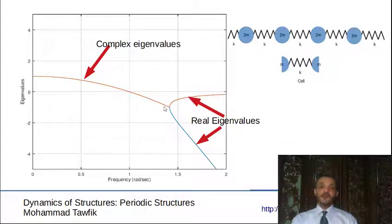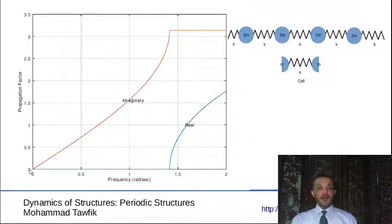Now, if we use these eigenvalues to obtain the propagation factor, so we will just use logarithm or the arc cosine. In that case, you will find that we have an imaginary number and the zero real number. So the imaginary part is increasing from zero to pi as the frequency changes from zero to square root of 2. As soon as it reaches square root of 2, it plateaus at the value of the imaginary part stops or gets a constant value of pi, while the real part starts growing from zero and growing as we increase the frequency.